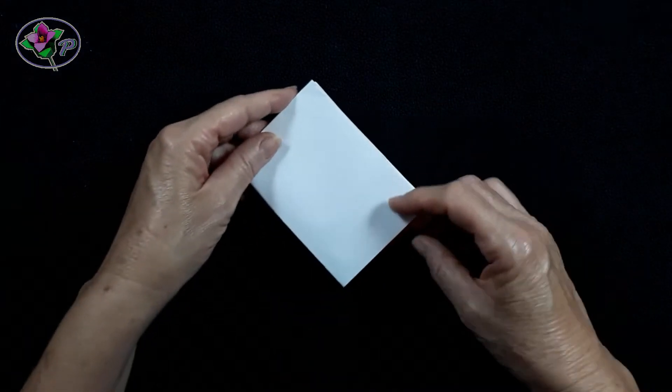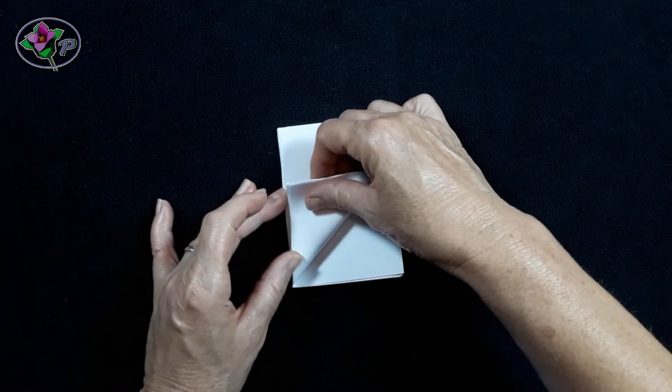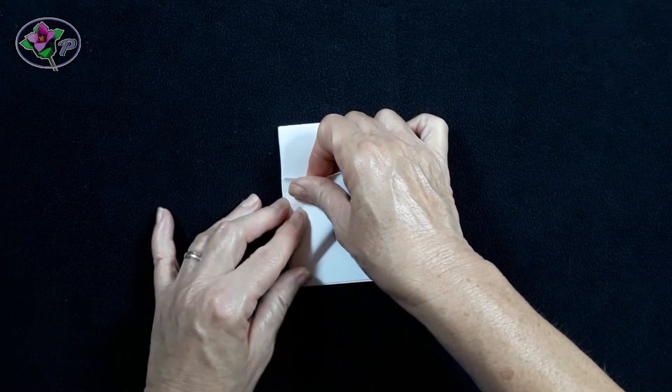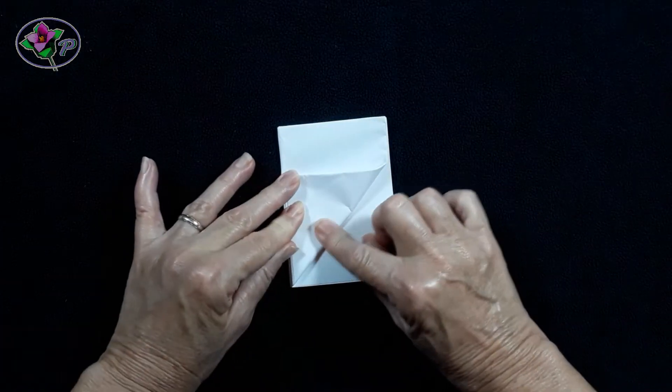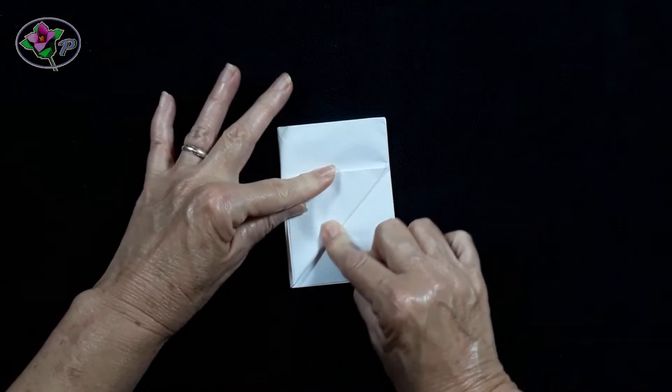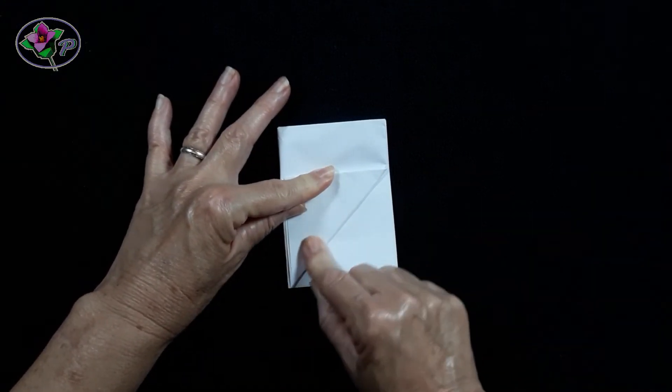Step 4. From this corner pick up four layers and fold to make a triangle. Make sure the edges line up and that the paper makes an exact point at the corner.